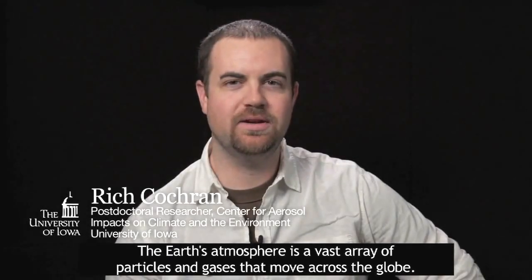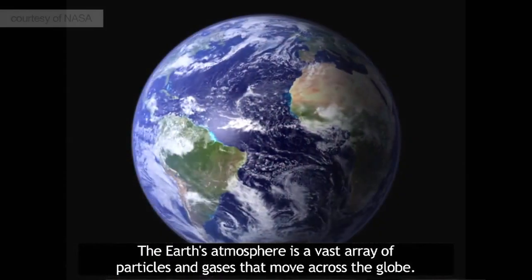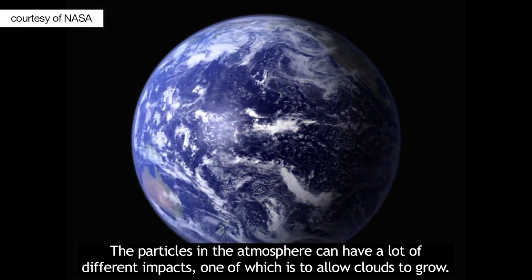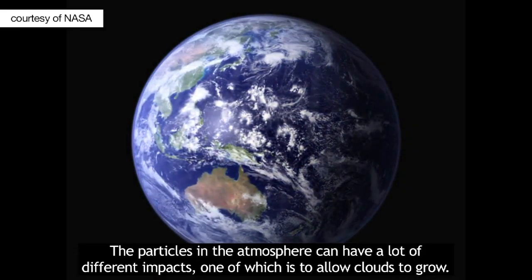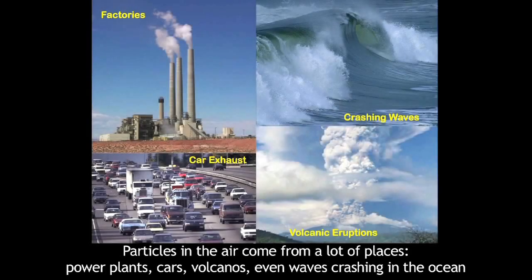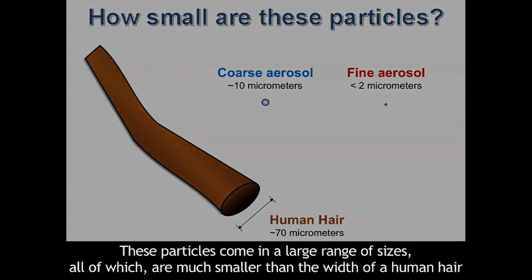Earth's atmosphere is a vast array of gases and particles that move across the globe. The particles in the atmosphere can have a lot of different impacts, one of which is to allow clouds to grow. Particles in the air come from a lot of places: power plants, cars, volcanoes, even waves crashing in the ocean. These particles come in a large range of sizes, all of which are much smaller than the width of a human hair.